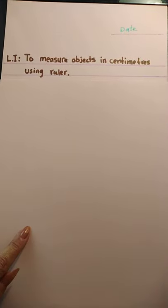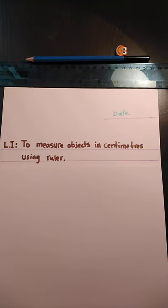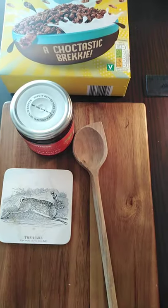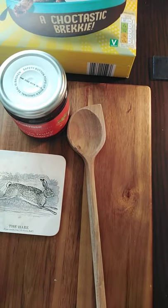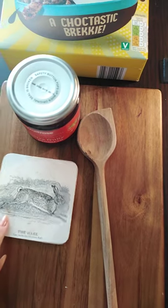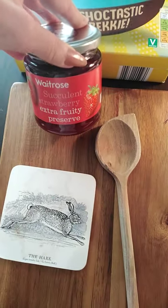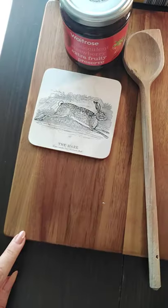Today you will need your piece of paper, ruler, pencil and rubber. You will also need to choose a few objects to measure. I have here a wooden spoon, coaster, jam jar, breakfast cereal and table mat.